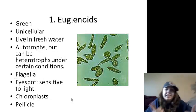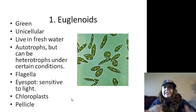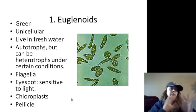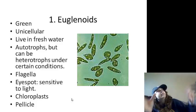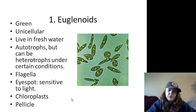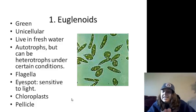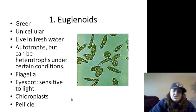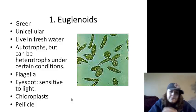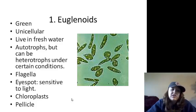Euglenoids are green, unicellular, and live in freshwater. They are autotrophs, but they can be heterotrophs when there's no sunlight — they capture and eat their food. They have a flagella and an eye spot that is sensitive to light, so they can do phototaxis, moving towards or away from the light. They have chloroplasts and a pellicle, which is the outer membrane covering outside of their cell membrane.